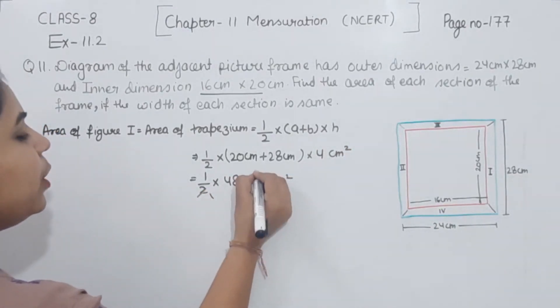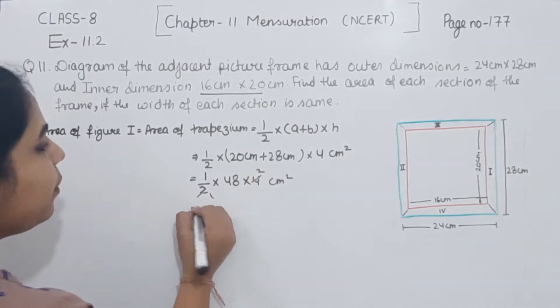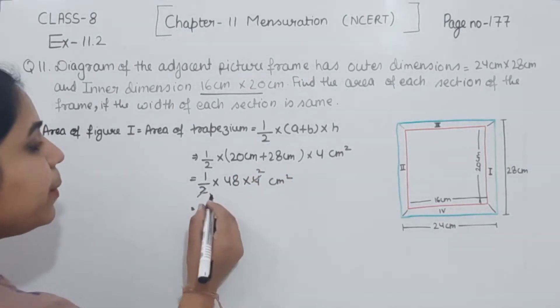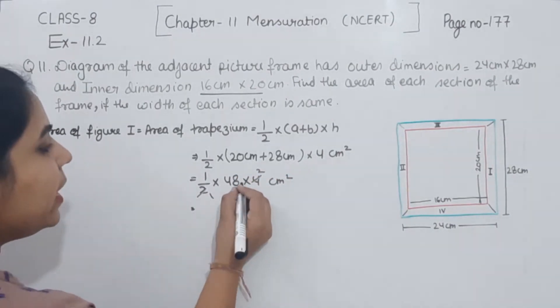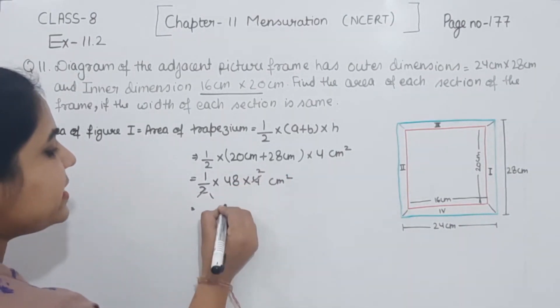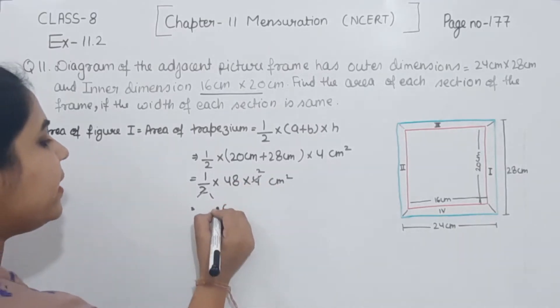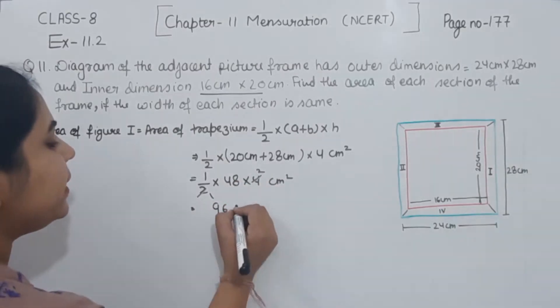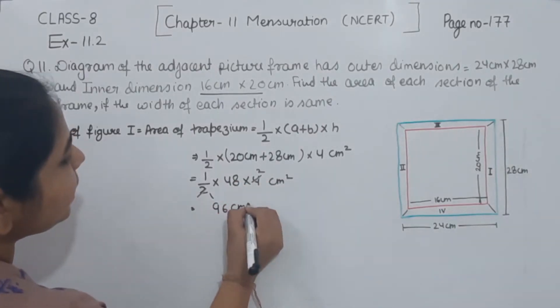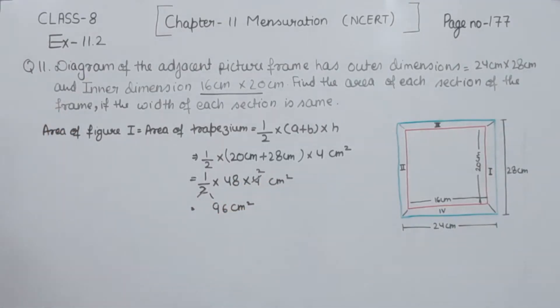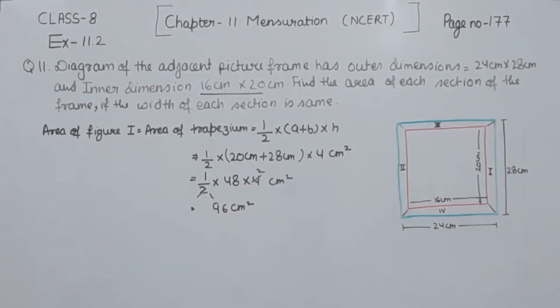Now solving: 2 × 1 = 2, 2 × 2 = 4, 2 × 8 = 16 carry 1, 4 × 2 = 8 and 1 gives 9. So we get 96 cm². The area of figure 1 is 96 cm².